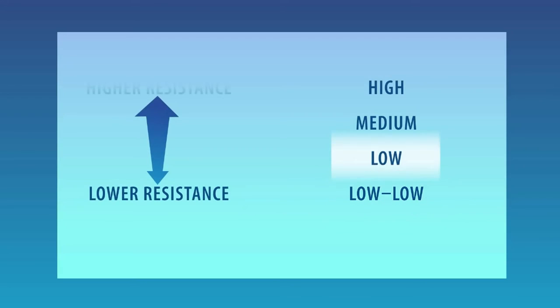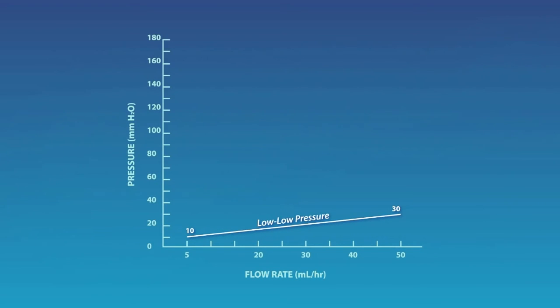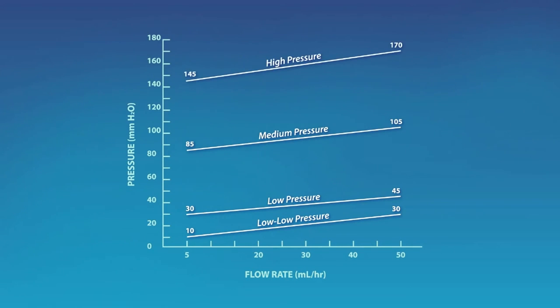The pressure flow graph shows the threshold at which the membrane will open for each pressure level at various flow rates. These levels are determined by the midpoint on the pressure level range at the typical CSF production rate of 20 to 25 milliliters per hour.